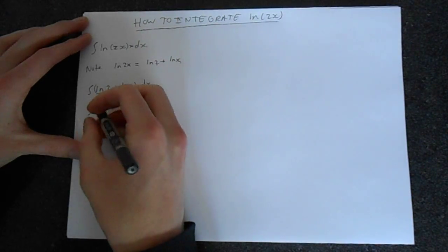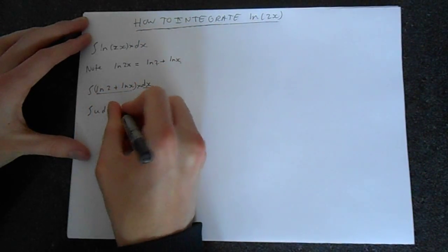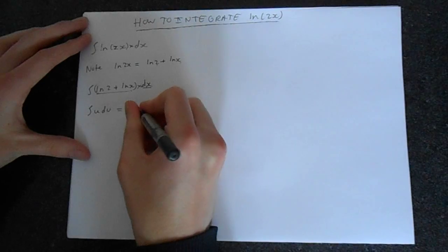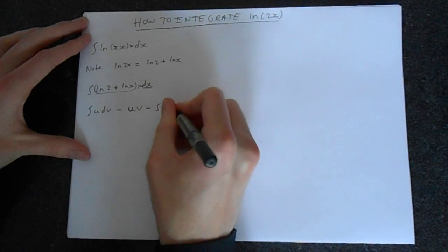So the formula we've got here is the integral of udv is equal to uv minus the integral of vdu.